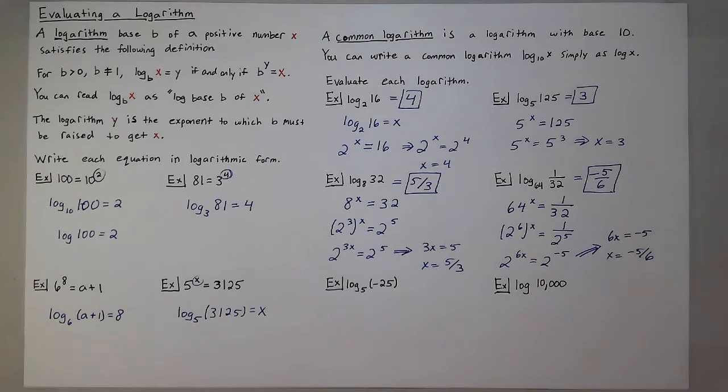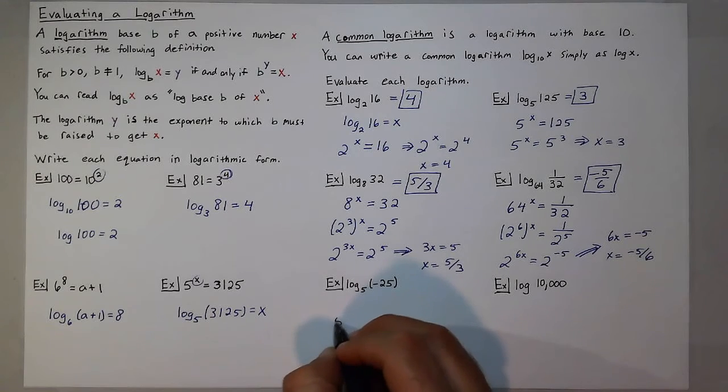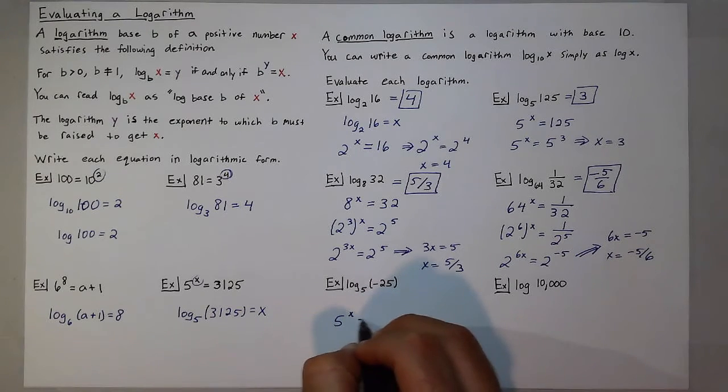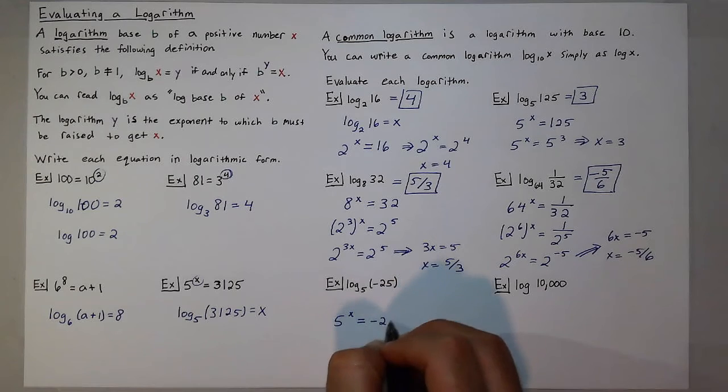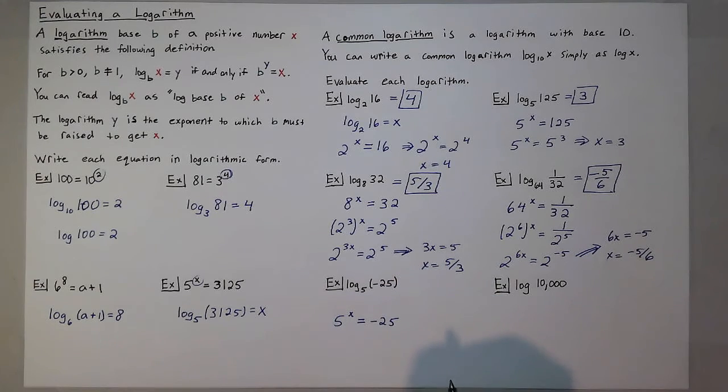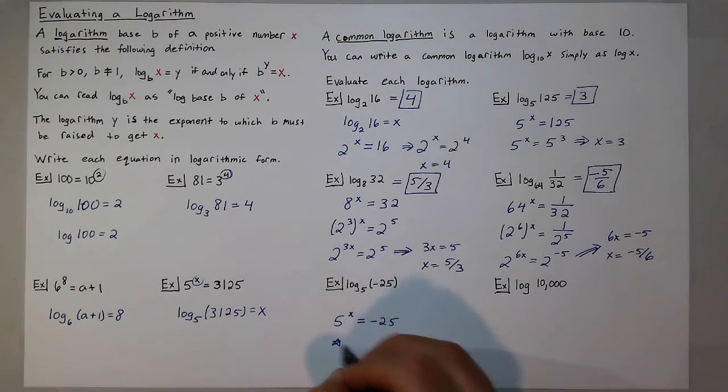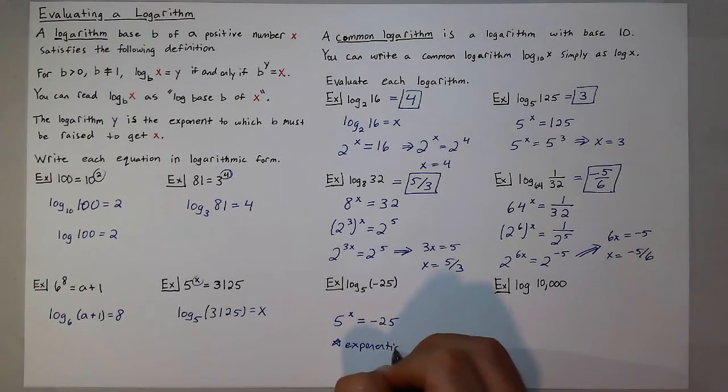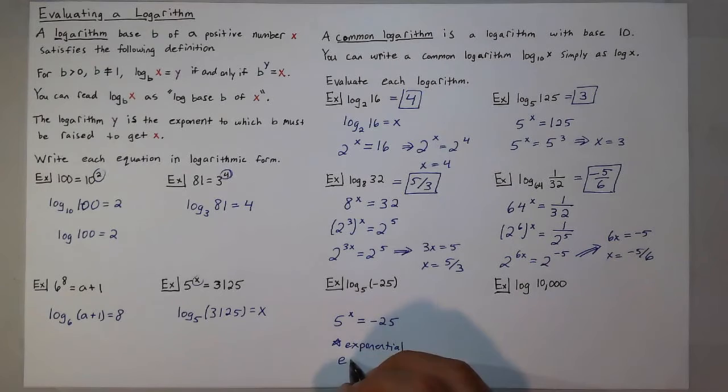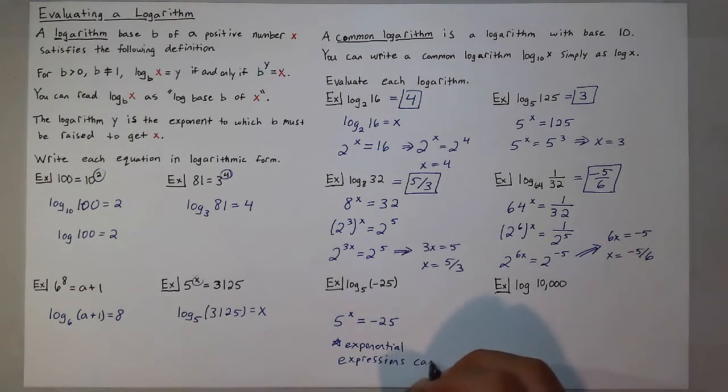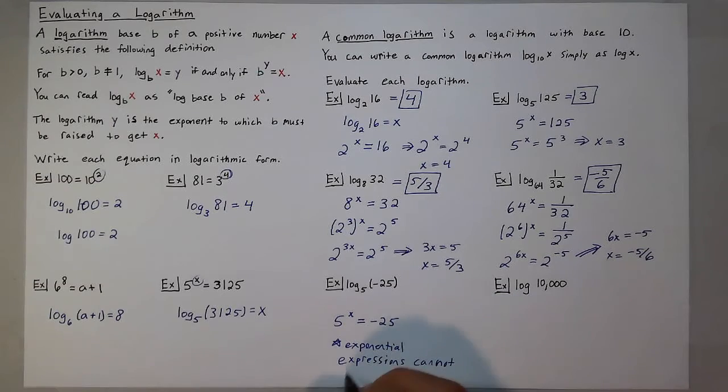Now, let's look at two unique situations. First, we have log base 5 of negative 25. The question here is 5 to what power is equal to negative 25? The one problem here is that exponential expressions cannot equal negative numbers.